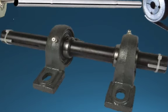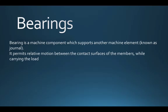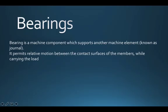Bearings support moving machine elements such as a shaft. A bearing is a machine element which supports another machine element, known as the journal, and it permits relative motion between the contact surfaces of members while carrying the load. So bearing deals with two functions: first, it carries the load, and second, it permits relative motion. That is the speciality of a bearing.